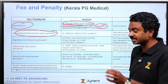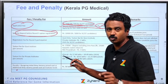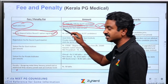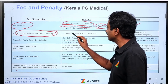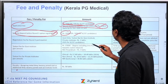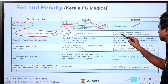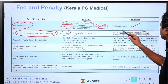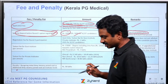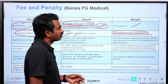Not at this stage — not during application — but at the time of option registration, which is the choice filling part. You pay 10,000 rupees, or 5000 for SC/ST candidates. This amount is adjusted to the tuition fee if the candidate joins.